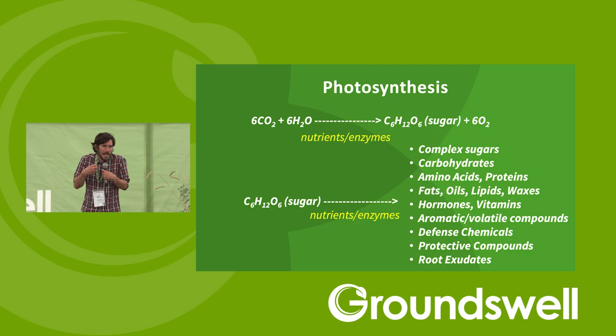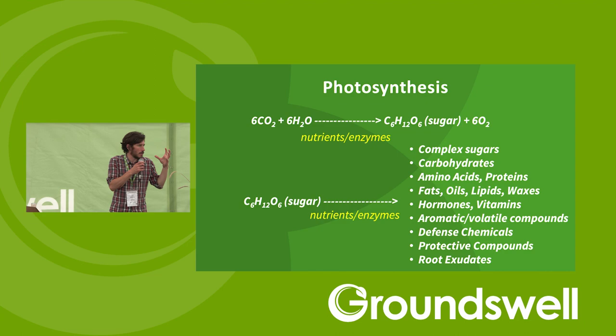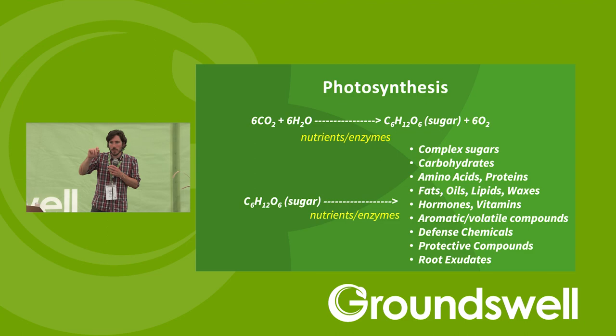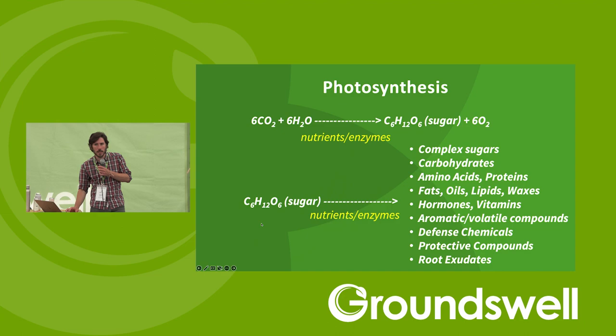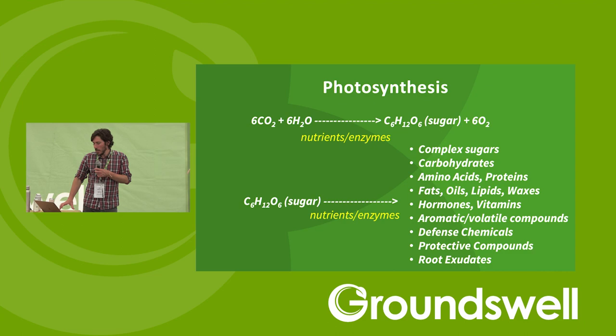We rearrange the carbon in that sugar to build all sorts of other compounds, which also includes defense chemicals and protective compounds. The plant can produce antifungal or antibiotic substances internally that can block pathogens, or insecticidal compounds that when insects consume them upset their digestion or act as deterrents. To enable that second step we also need the essential macro and micronutrients to drive these secondary processes — building these secondary metabolites after primary photosynthesis.